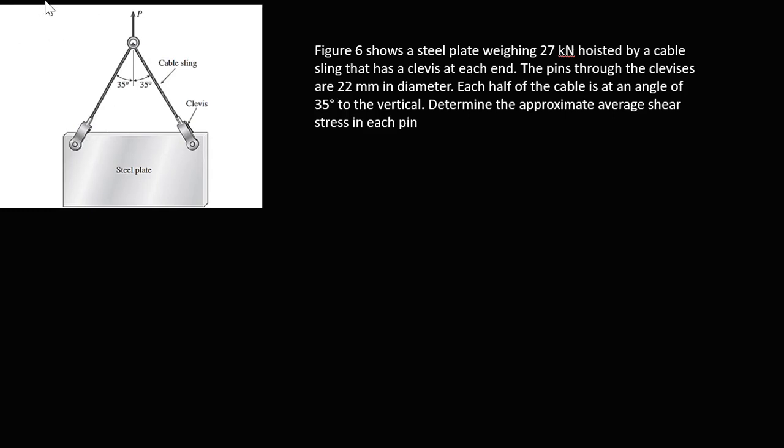Let's quickly discuss our problem on screen. This is Figure 6, which shows a steel plate weighing 27 kilonewtons. The weight W equals 27 kN. It's hoisted by a cable sling that has clevises. The clevises are U-shaped holders with a bolt or pin through them.